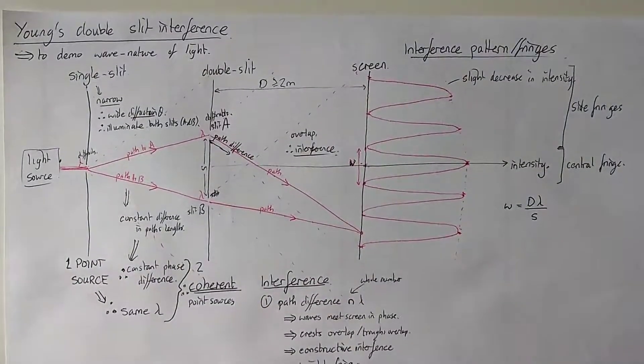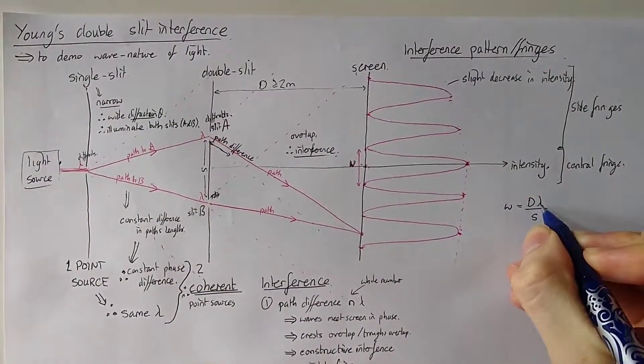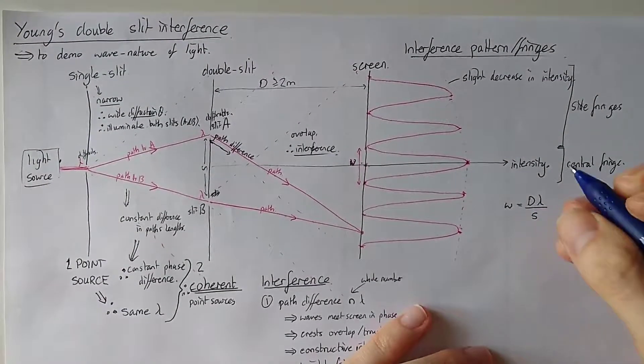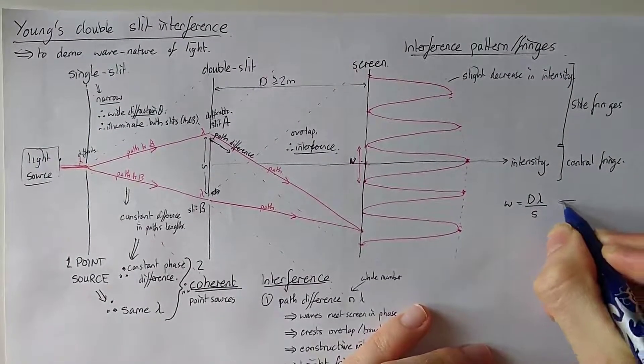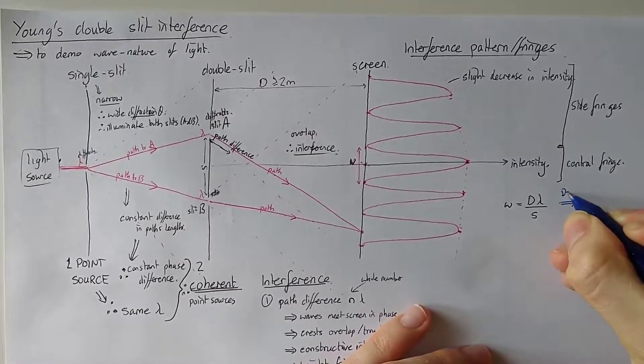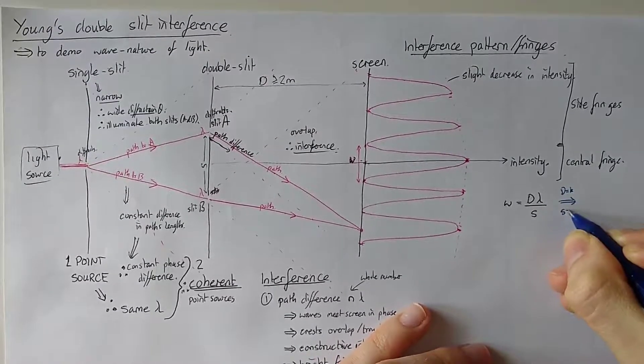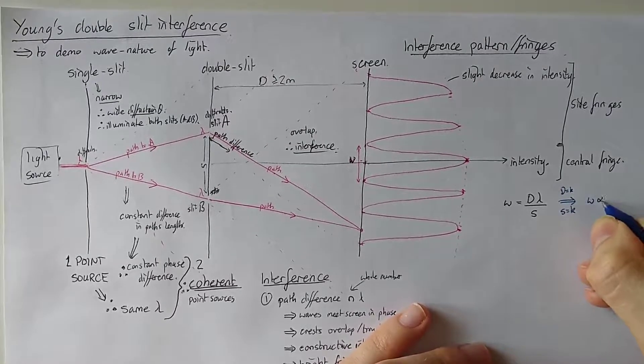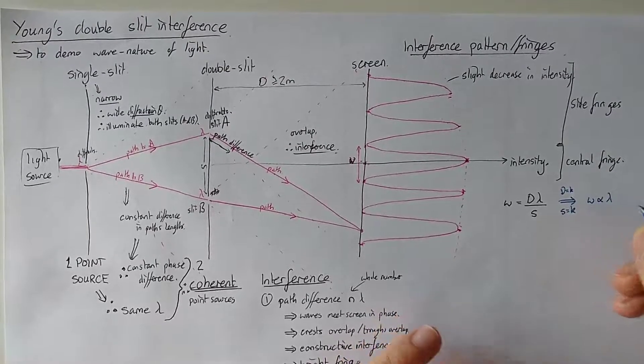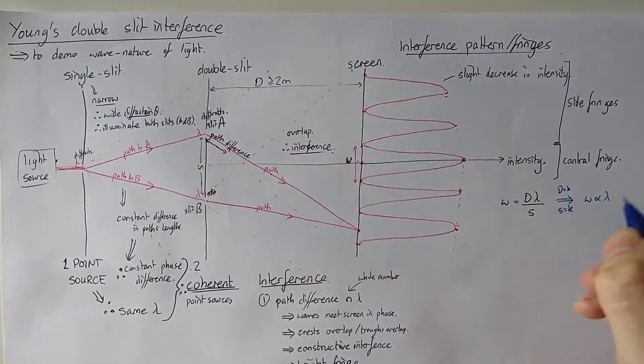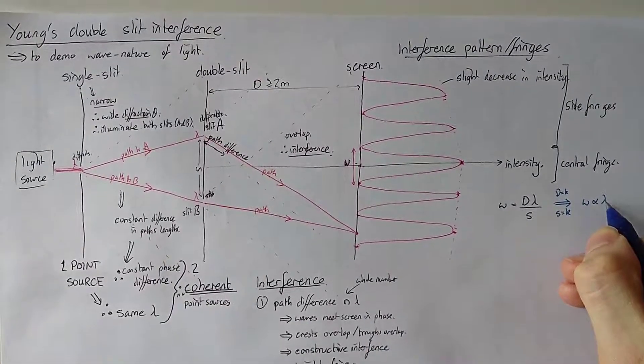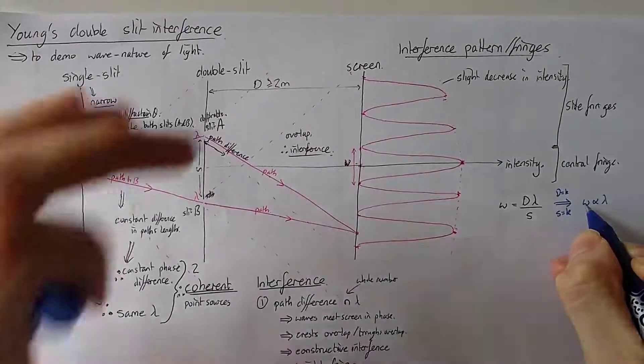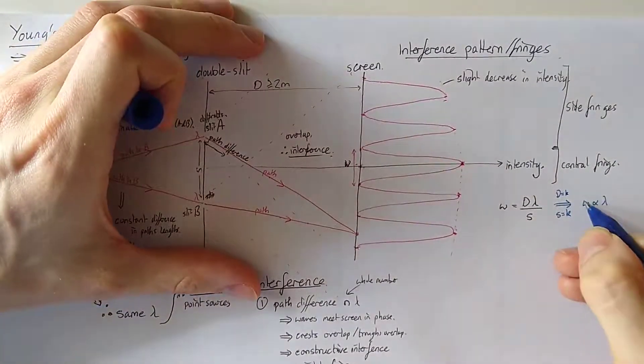What this relationship between W and lambda means is that if D is constant, so if D equals K and S equals K, then we get W is proportional to lambda. So if we go for blue, which is a lower lambda, then our width of the fringes will decrease.